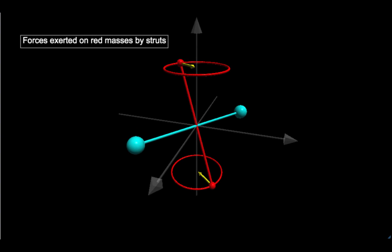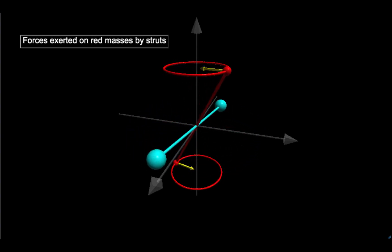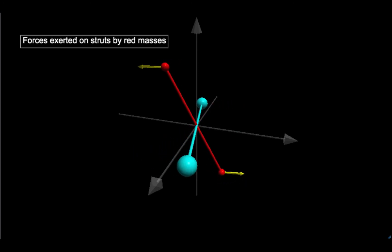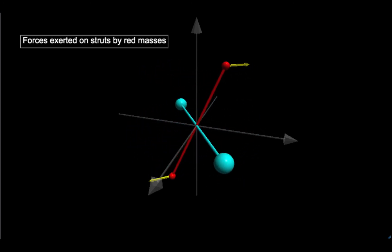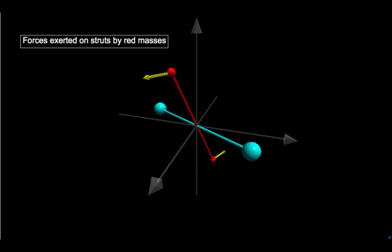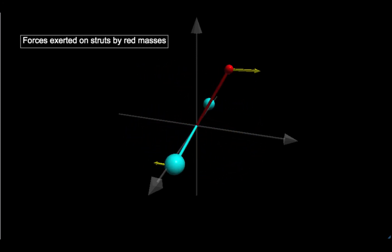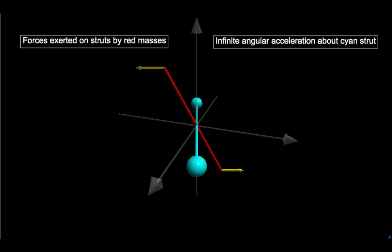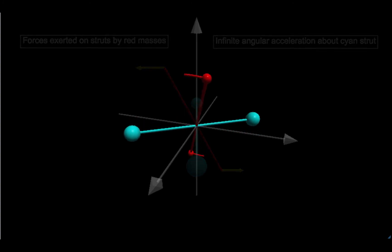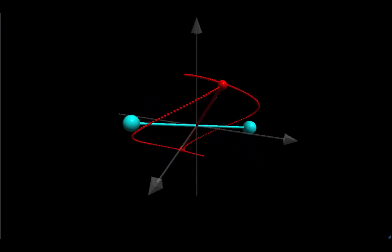Here's why: by Newton's third law, the forces that the struts exert on the red masses are equal and opposite to the forces that the red masses exert on the struts. If these forces have a component perpendicular to the plane of the body, then the red masses will create a torque on the rest of the body. The rest of the body — the two struts and the large cyan masses — has zero moment of inertia about this direction, and a nonzero torque would create an infinite angular acceleration. The conclusion is that the struts can't exert radially inward forces to keep the red masses moving in a circle. Therefore, each of the red masses will swing outward, away from the axis of rotation and towards the equator, due to its own inertia.